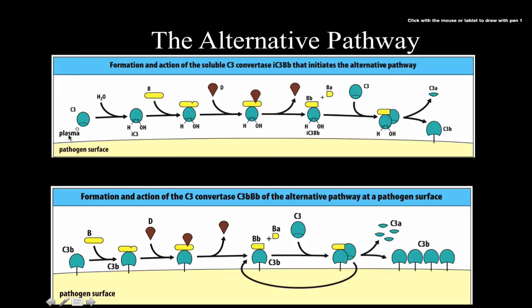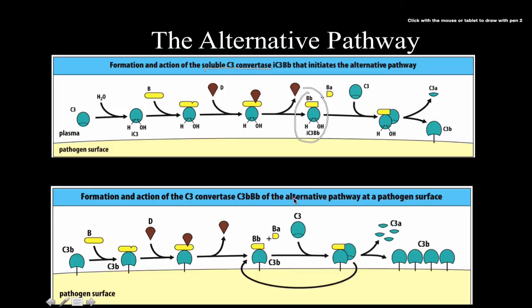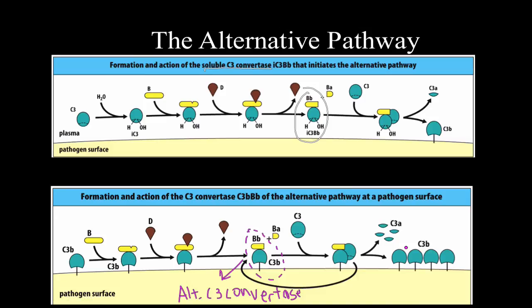This creates an almost logarithmic amplification: the diagram shows C3 in plasma spontaneously hydrolyzed by water, Factor B binds, Factor D cleaves it to form the soluble C3 convertase. C3 beta then recruits Factor B cleaved by Factor D to form the alternative C3 convertase on the pathogen surface, cleaving more and more C3. Two becomes four, four becomes sixteen — this can get out of hand very quickly, so there must be regulatory mechanisms to control it.